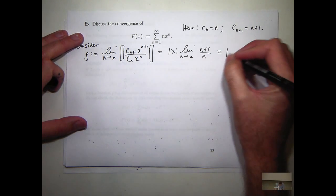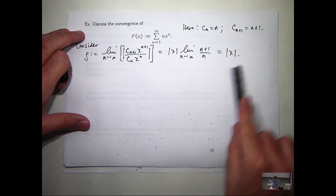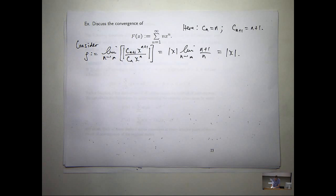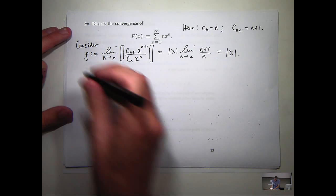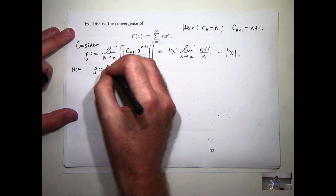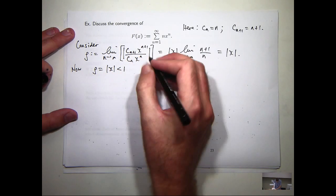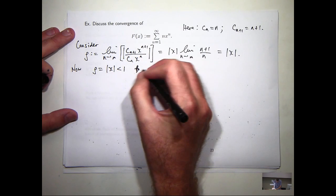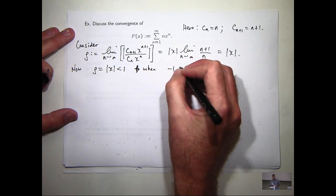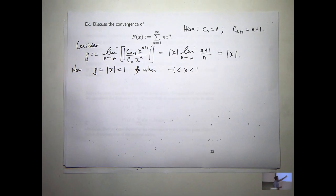So we get down to this. Now this will be less than 1 for certain values of x and greater than 1 for other values of x. So here's our little interval: x is between minus 1 and positive 1 from now on.